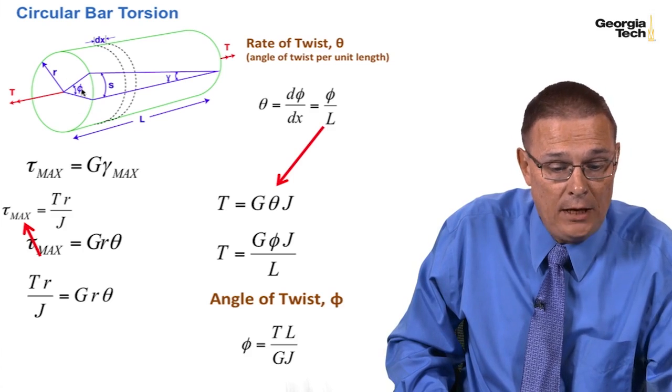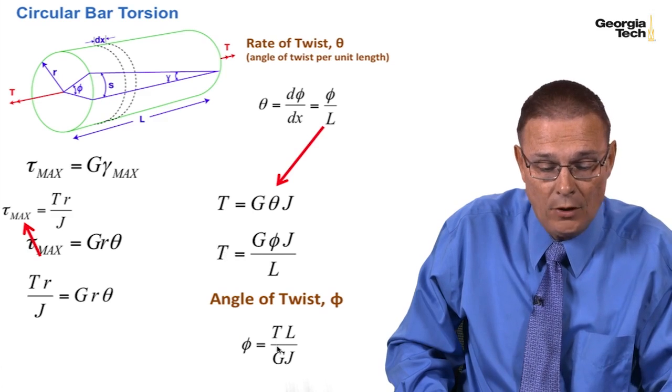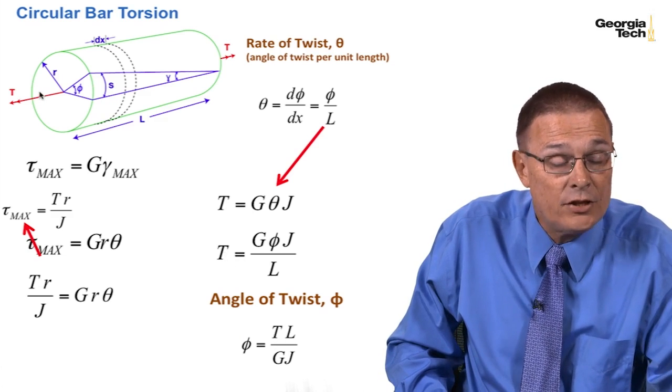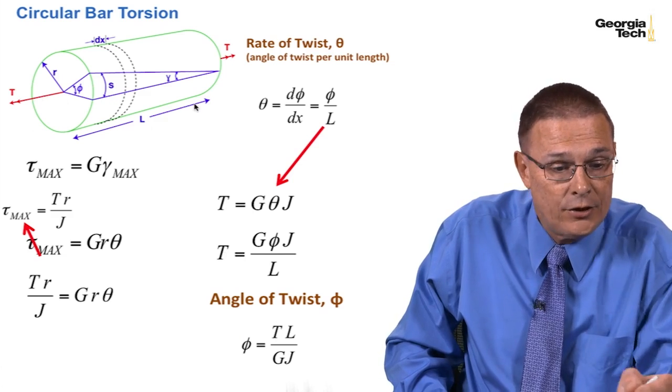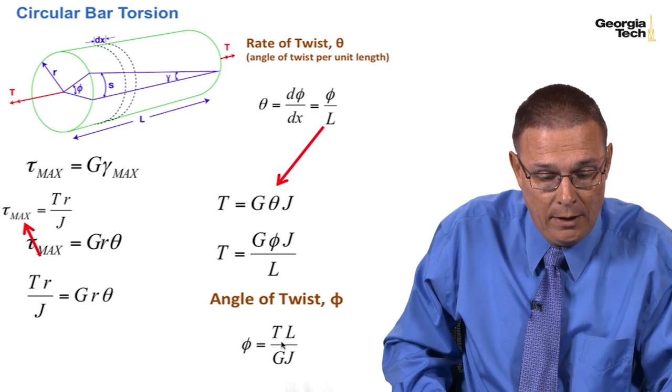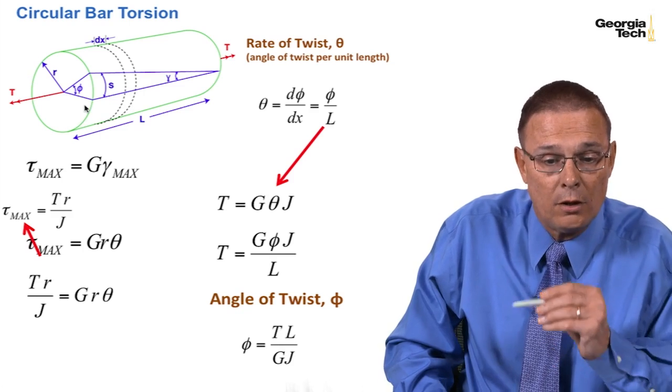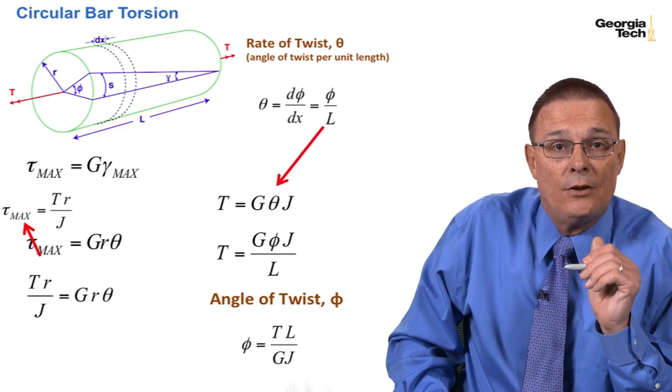And so the angle of twist phi here is equal to TL over JG, or GJ. T is the applied torque. L is the length of the cross-section, which we're trying to find the twist for. G is the modulus of rigidity. And J, again, is the polar moment of inertia.